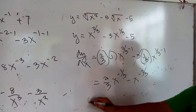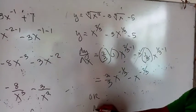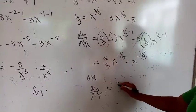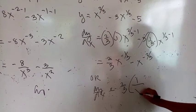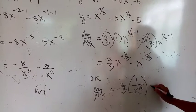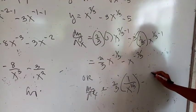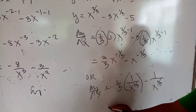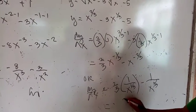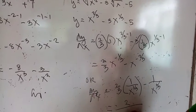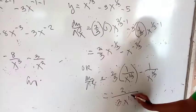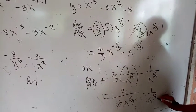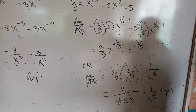Or, if you want to bring the negative exponents down, that would be 2 thirds times 1 over x to the 1 third, then minus 1 over x raised to the positive 2 thirds. In other words, this would be 2 times 1, that is 2, all over 3 times x raised to the 1 third, minus 1 all over x raised to the 2 thirds.